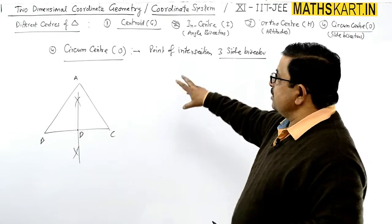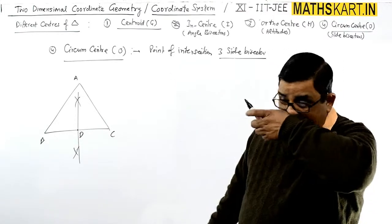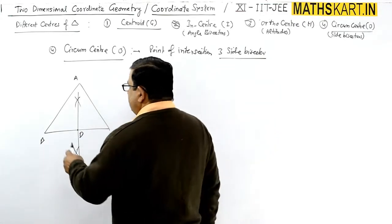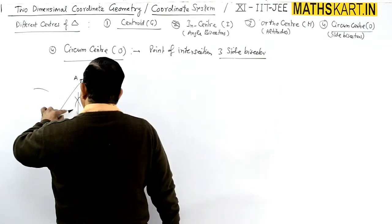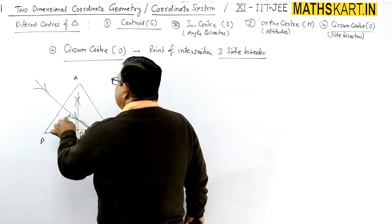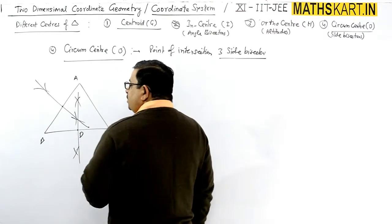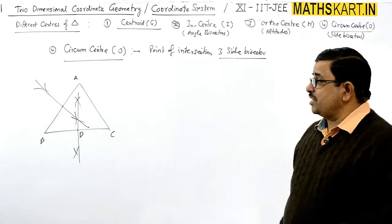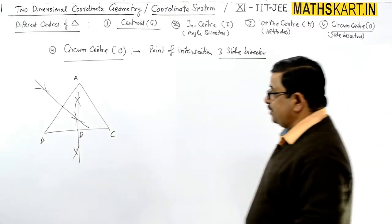We have to find out the circumcenter, and that circumcenter is the point of intersection of three side bisectors. You will have more than half compass open. When you join these lines, the midpoint is obtained. The side bisectors are obtained.